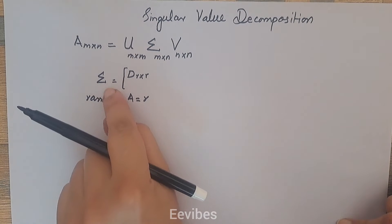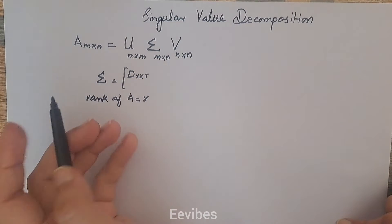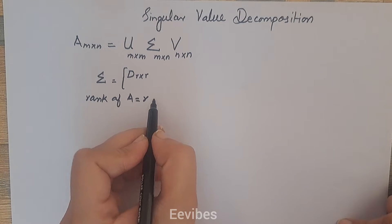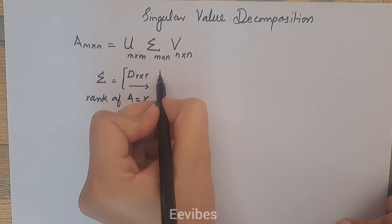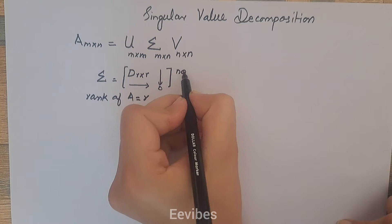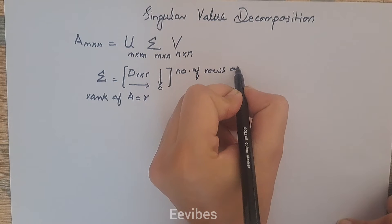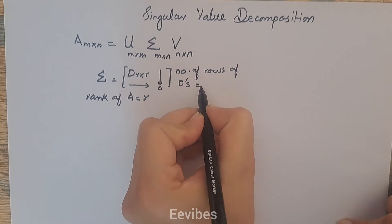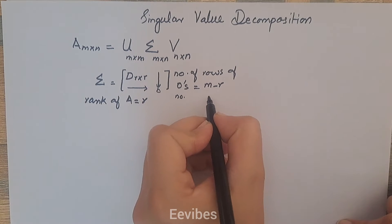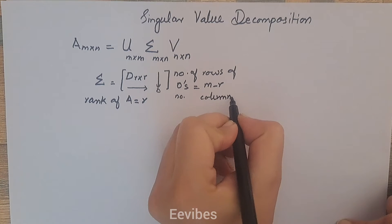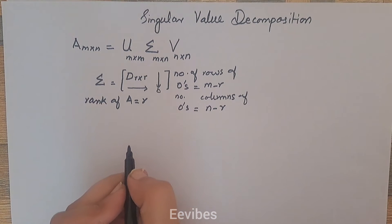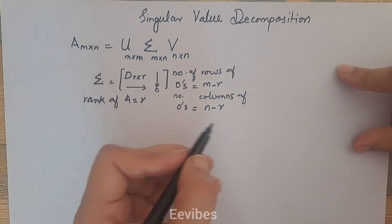Further, Σ is composed of the diagonal matrix D whose order will be equal to R×R, where R is the rank of matrix A. Then we introduce rows and columns of zeros such that the number of rows of zeros will be equal to M minus R, and the number of columns of zeros will be equal to N minus R. This is an important point to always remember.